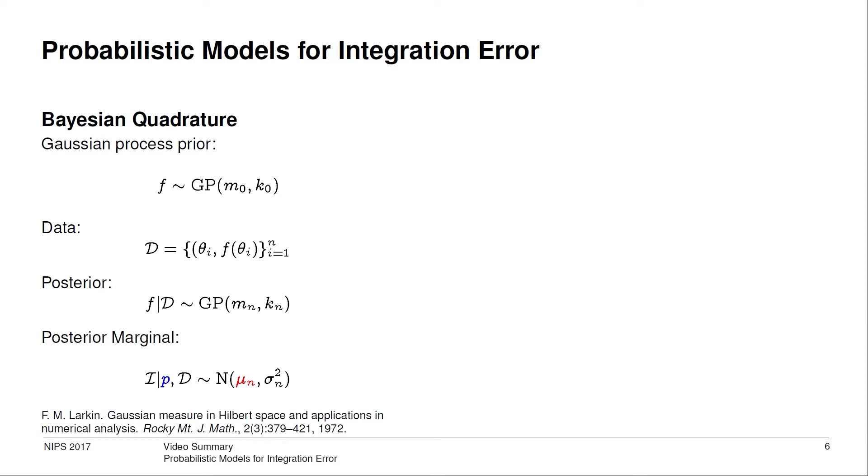By the way, this idea dates back at least to Mike Larkin in 1972. Let's take a closer look at the posterior mean mu n for the integral. It depends on p, which is unfortunate for us, as p is unknown. So let's treat p as something to be inferred.